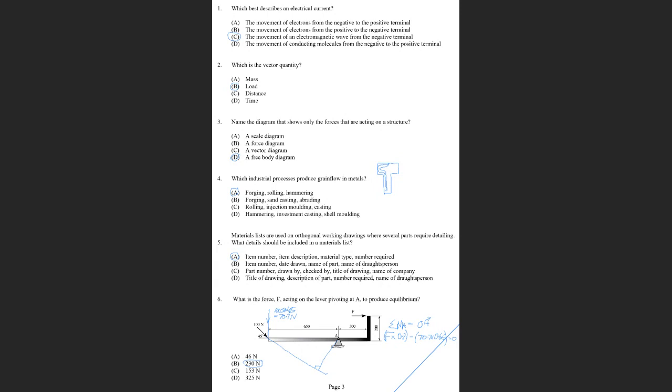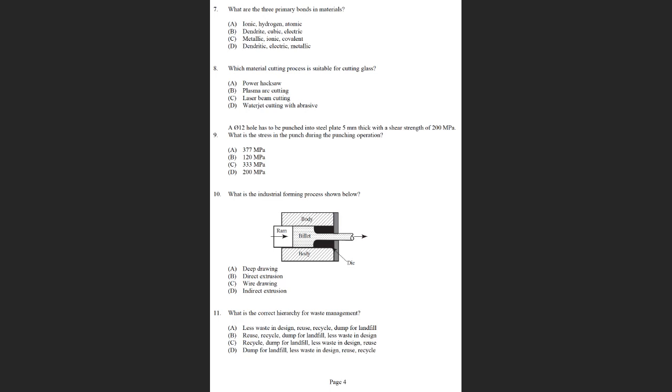We'll go to the second page. What are the three primary bonds in materials? You should know this: metallic, ionic, and covalent. A dendrite is the shape produced on cooling of a metal from a nucleation point. Cubic and electric are irrelevant or wrong.